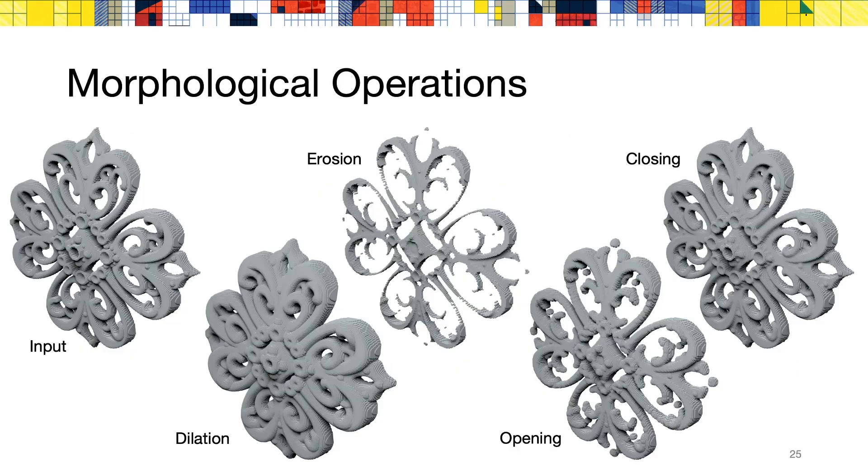More advanced morphological operations, such as opening and closing, can be computed by chaining elementary operations, as you can see in this figure. Opening and closing can be used to guarantee a minimum feature size, or a minimum void size, depending on the target application.